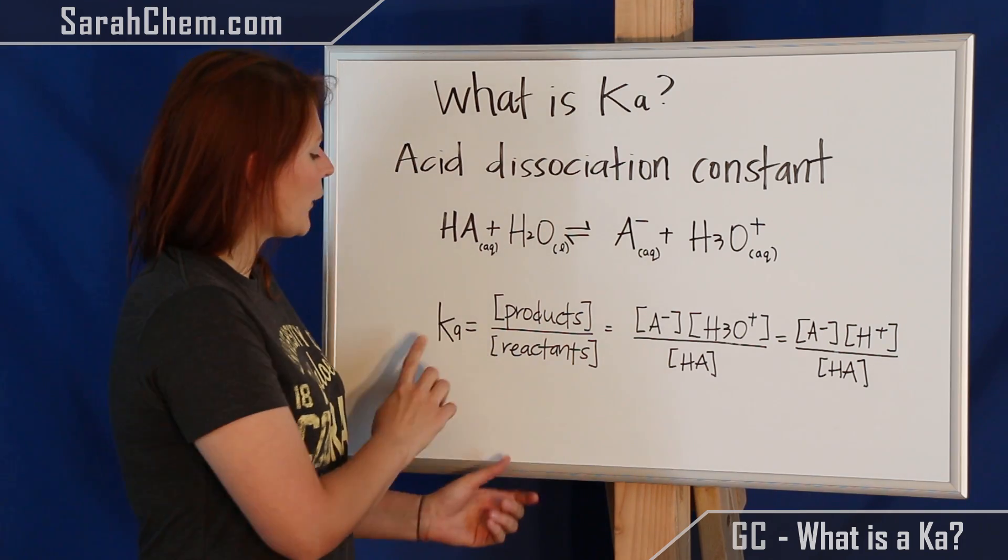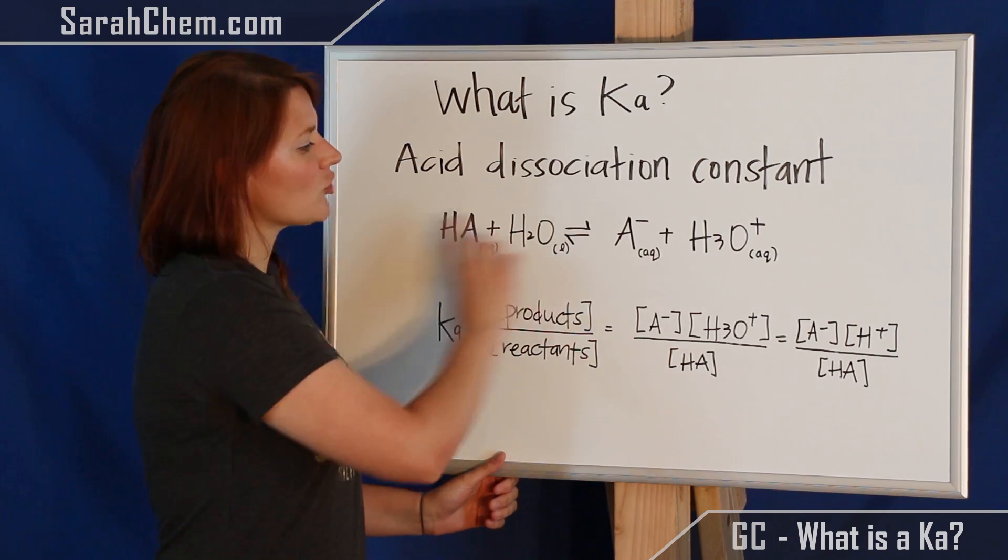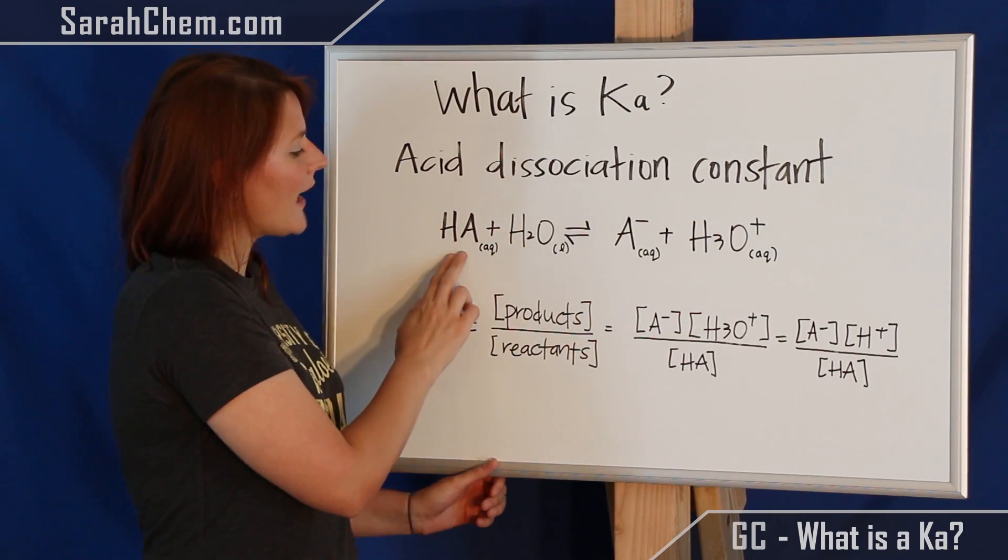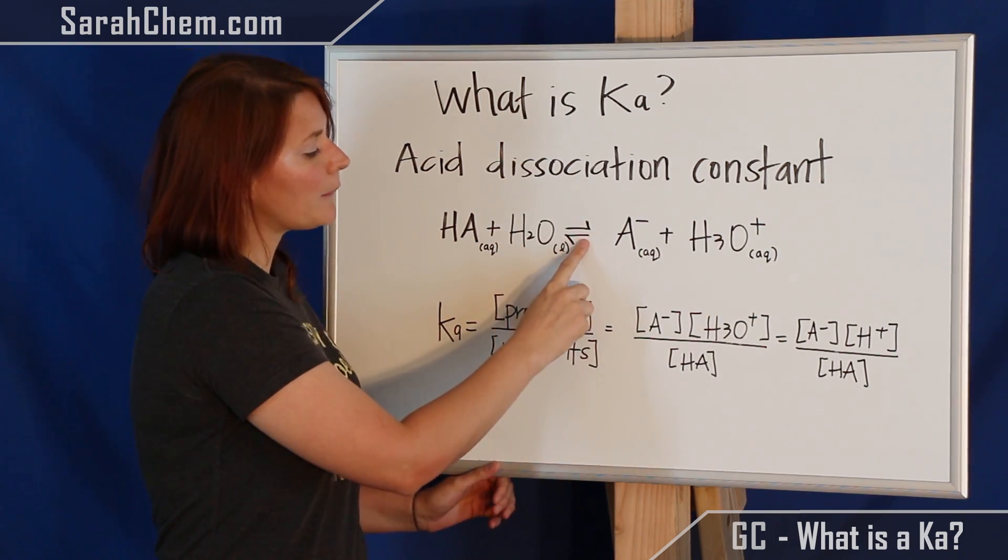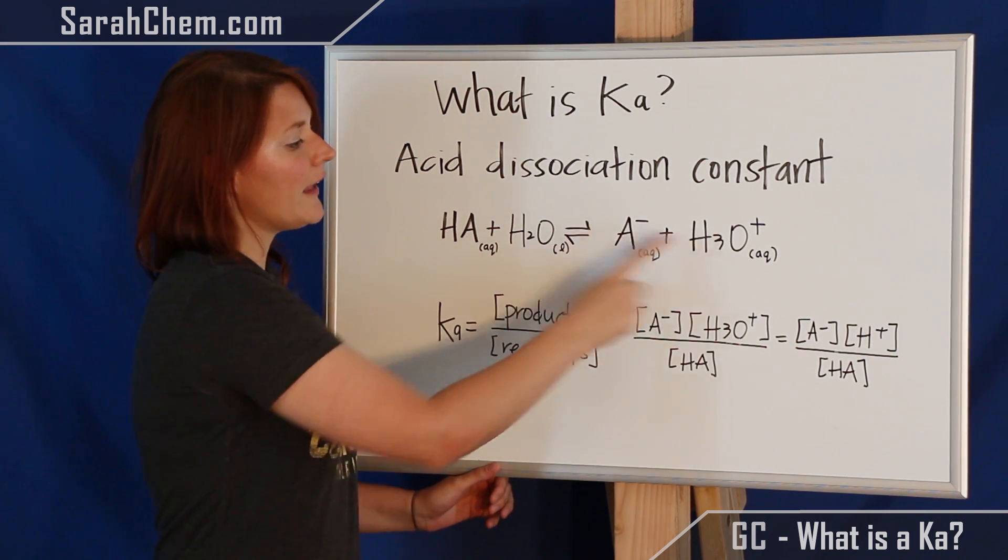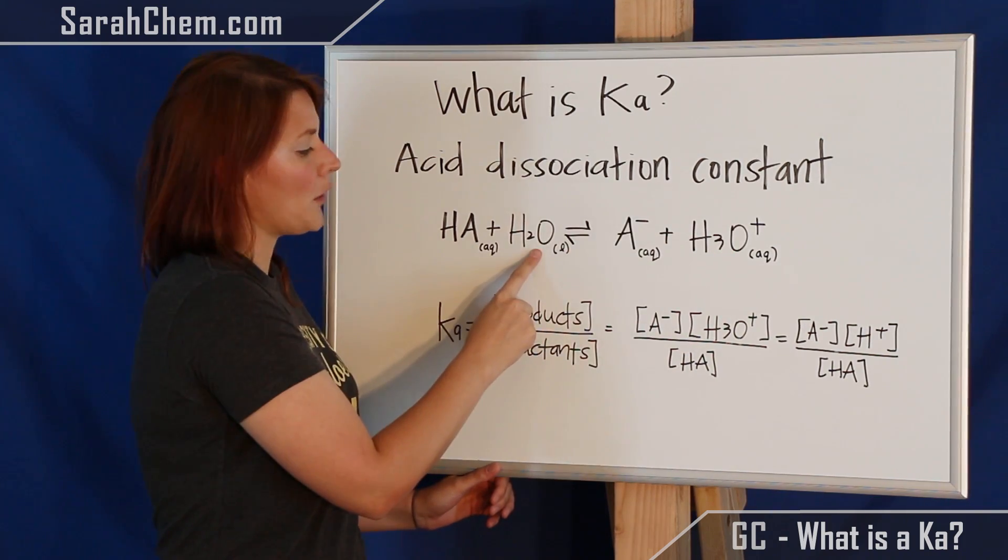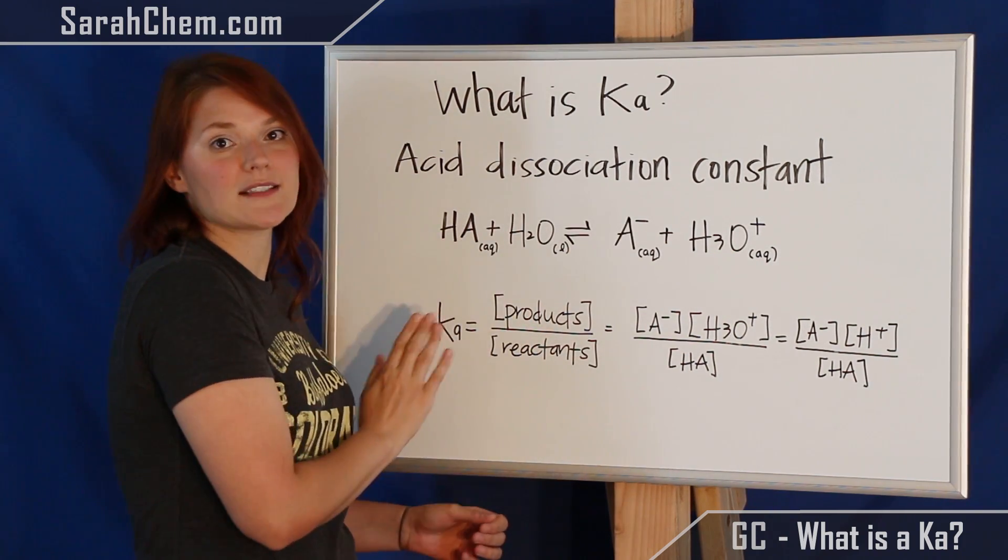So if we take a look at this, we're going to talk about the expression that we have for K. So now the generic reaction that we have for an acid would be the acid in water reaches equilibrium, where we're forming A-, the conjugate base for this one, and hydronium or H3O+, which is the conjugate acid of water. In this case, water will be acting as a base.